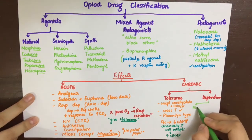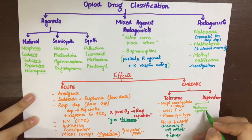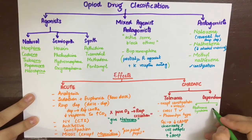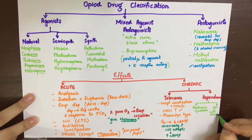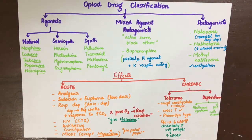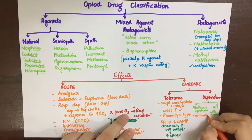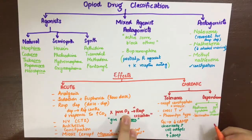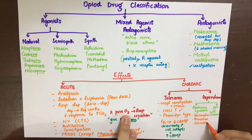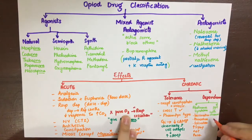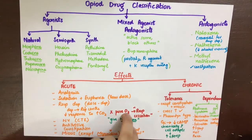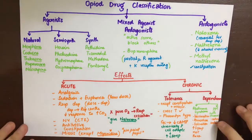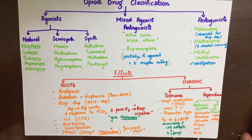Dependence can manifest as abstinence syndrome or precipitated withdrawal. Abstinence syndrome occurs when an addict is deprived of opioids for a long time and manifests as lacrimation, rhinorrhea, salivation, anxiety, sweating, and goosebumps — due to sympathetic activation, not parasympathetic. Precipitated withdrawal is managed by administering an antagonist to a dependent person.